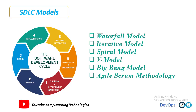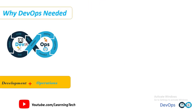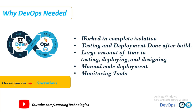We will talk about these models in a different session. Now we will see why DevOps is needed. Before DevOps, the development and operations teams worked in complete isolation. Testing and deployment were isolated activities done after the build, consuming more time than actual build cycles. Team members spent a large amount of time on testing, deploying, and designing instead of building the project. Manual code deployment leads to human errors in production. Coding and operations teams had separate timelines and were not in sync, causing further delays. There were also too many monitoring tools required.